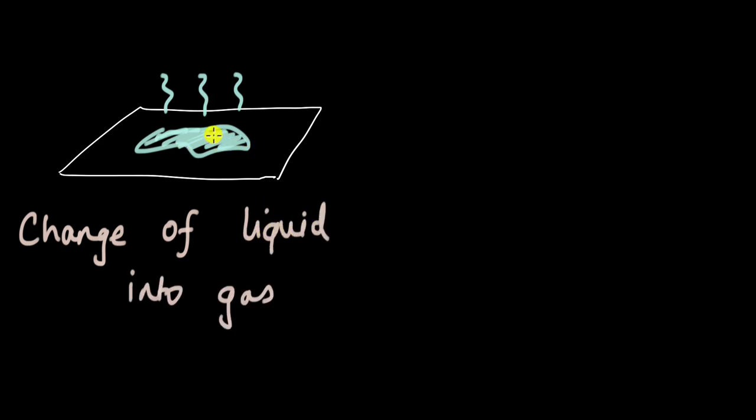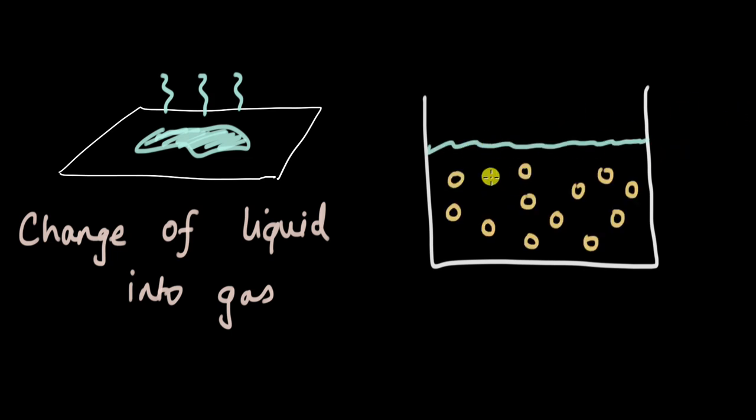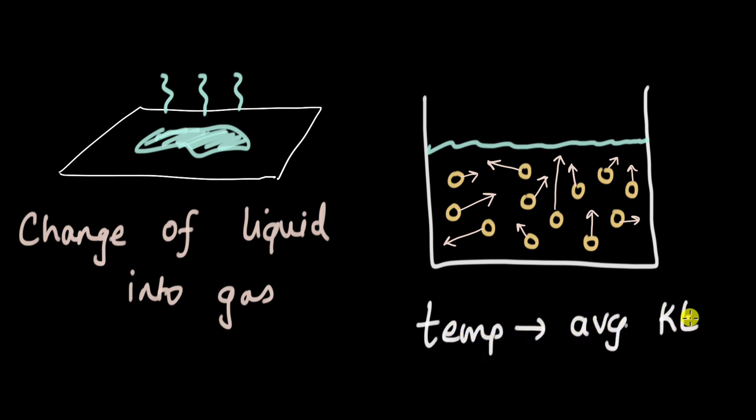Now when we zoom in and try to understand what's happening at the particle level, let's say we have this container with some water in it. There are these particles which are moving around randomly at different speeds. Now this body of water has a certain temperature of its own. And the temperature is the average kinetic energy of these molecules. So all of these molecules are moving with different speeds, which means they have different kinetic energy. There will be an average kinetic energy and that really determines the temperature of that body of water.